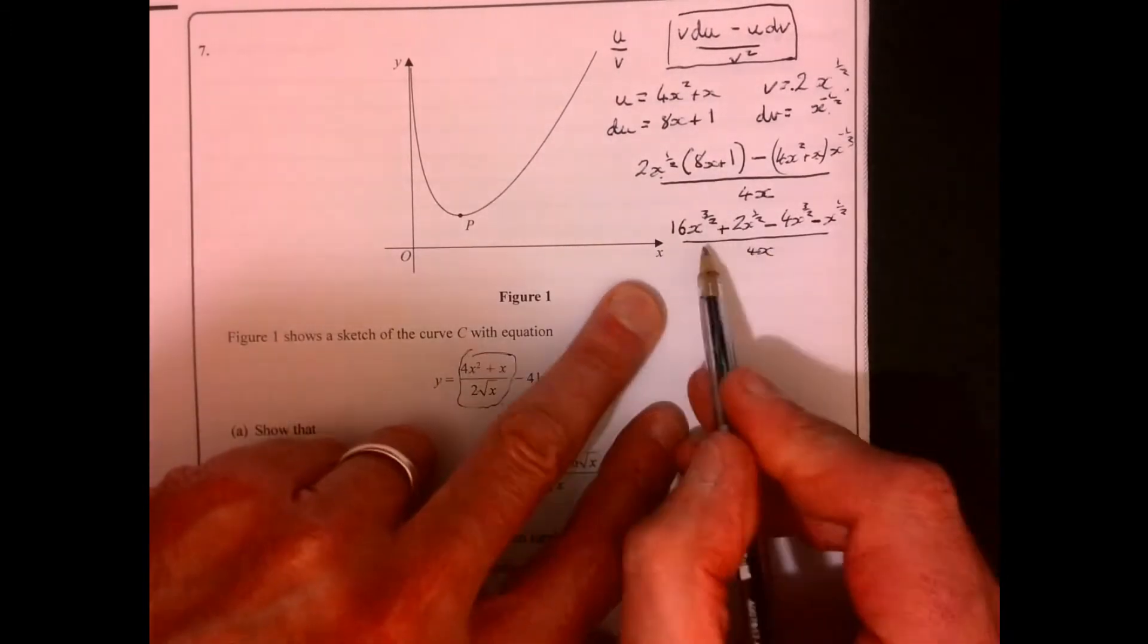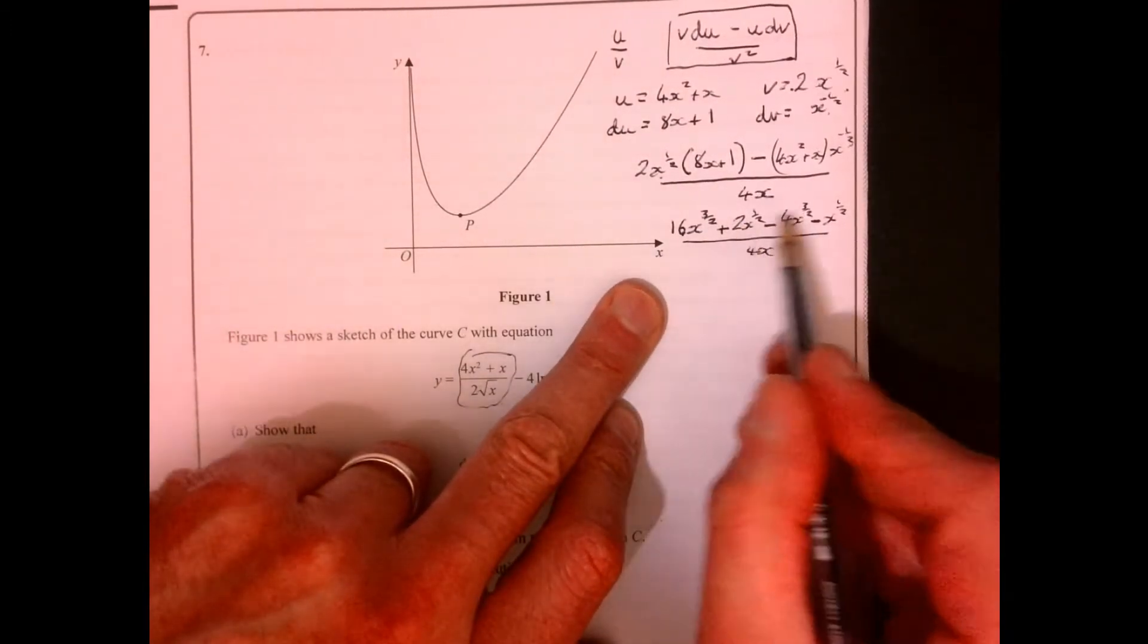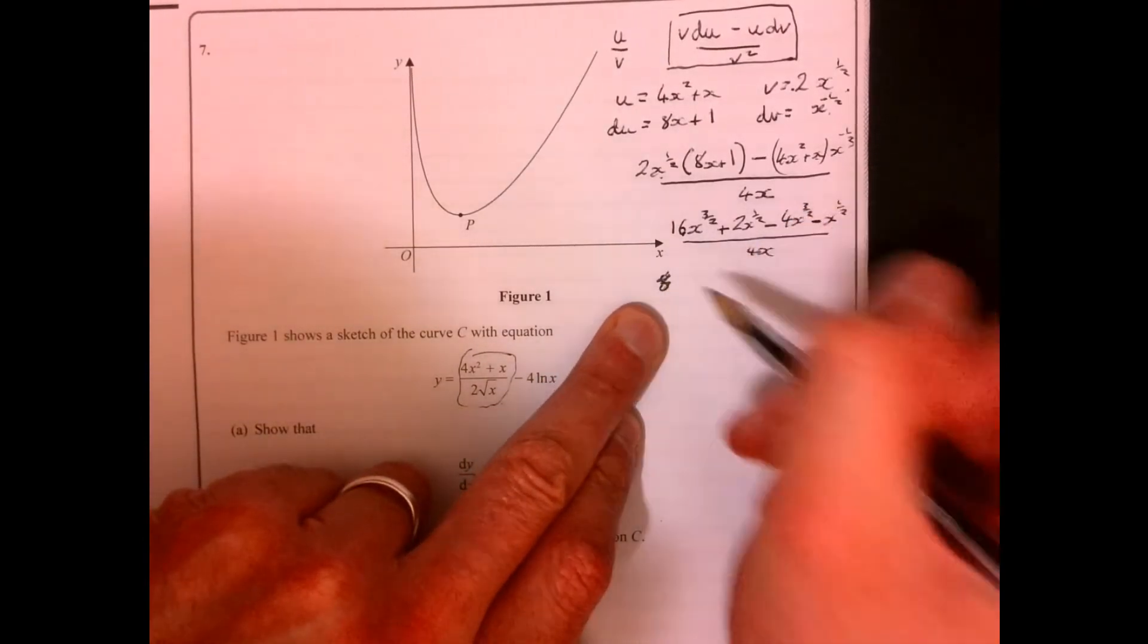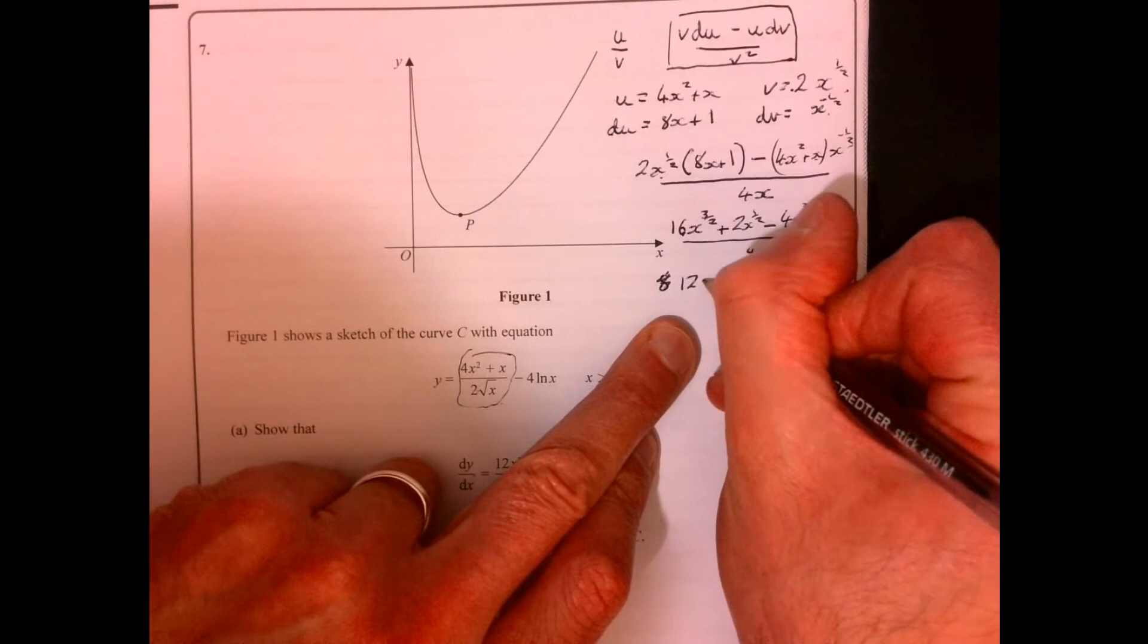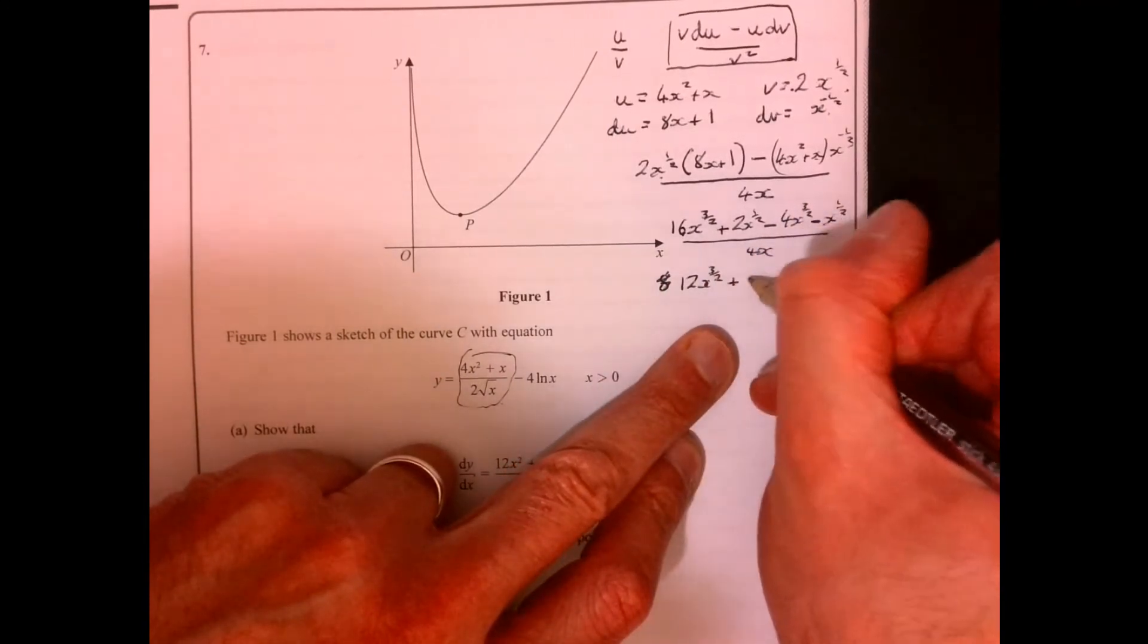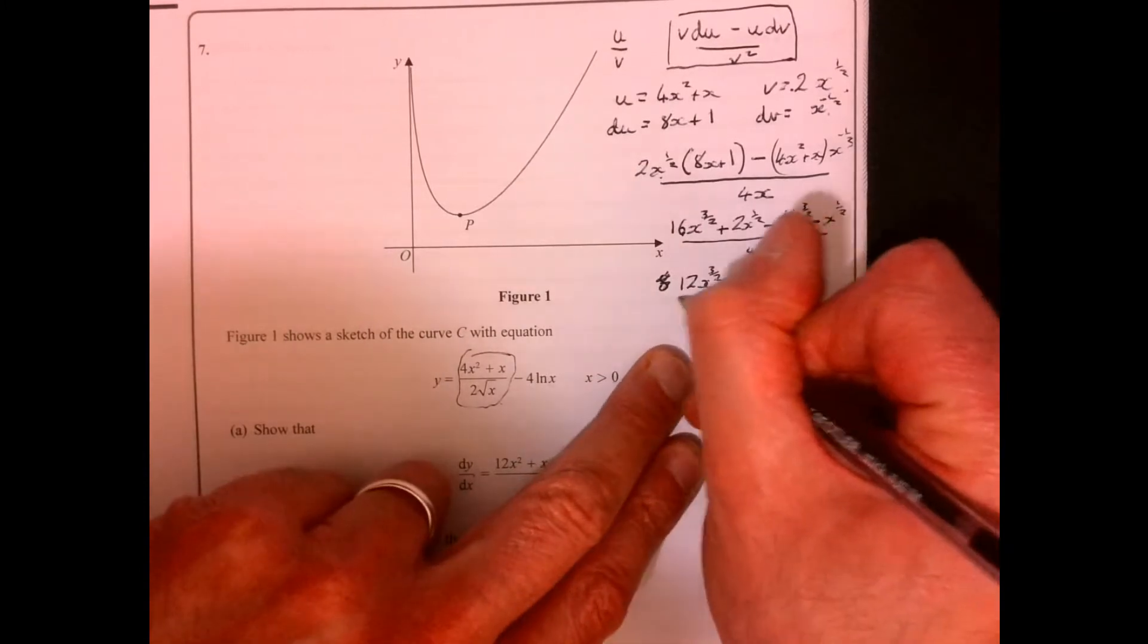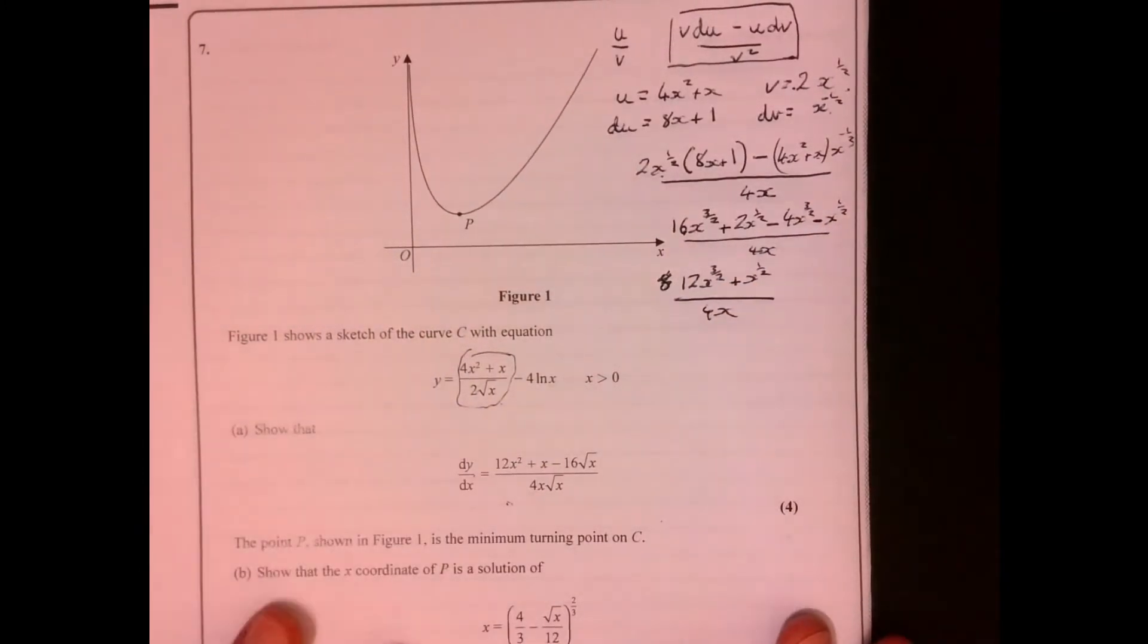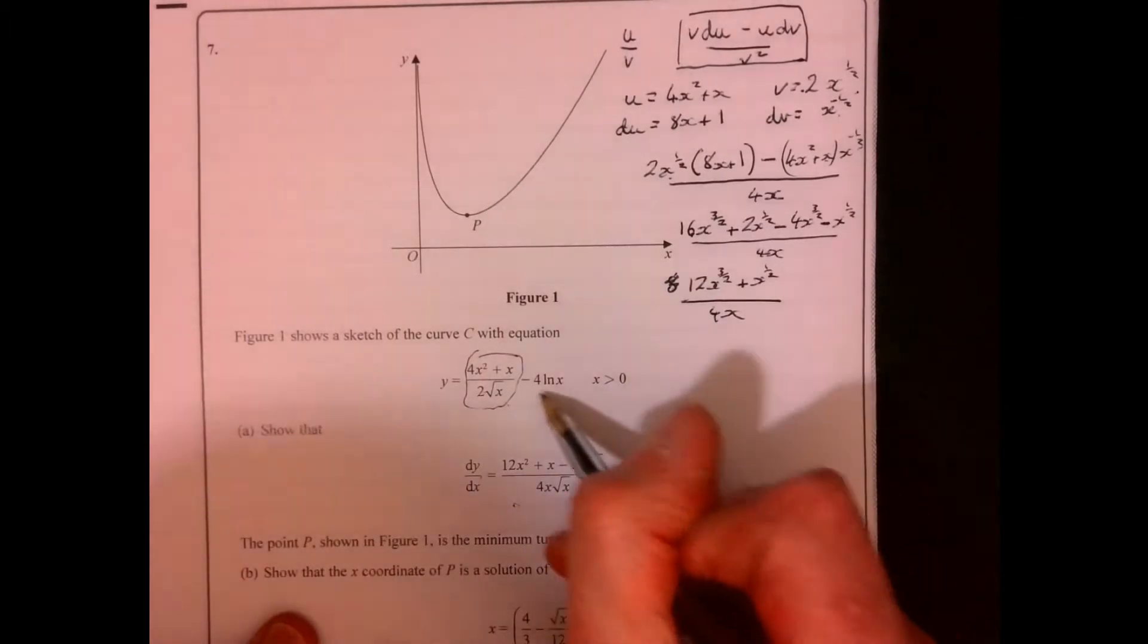Just tidy it up a little bit more because this one take away this one, this one take away this one. That gives us 12x to the 3/2 plus x to the half, and that's over 4x.